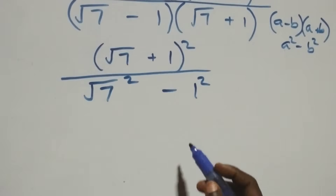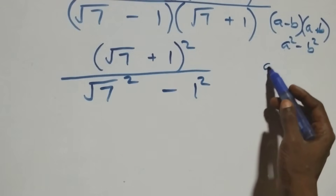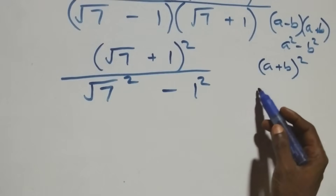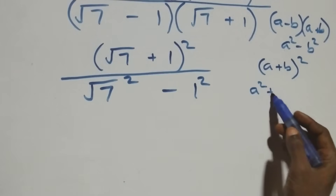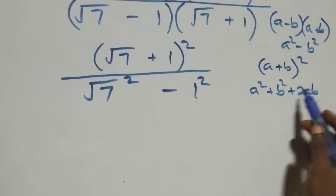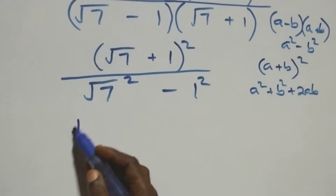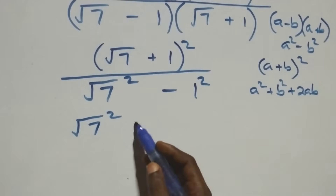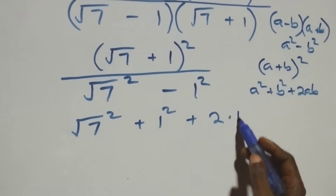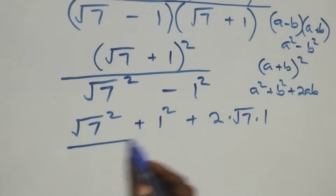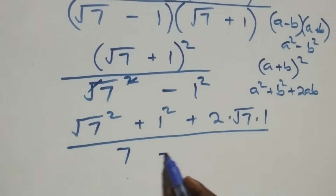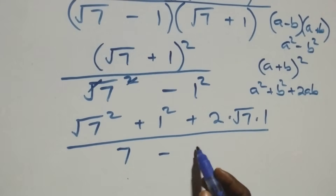Expanding the numerator using (a + b)² = a² + b² + 2ab, we get √7 squared plus 1 squared plus 2 times √7 times 1. The square cancels the square root giving 7, plus 1 squared which is 1, then minus 1 squared which is also 1.